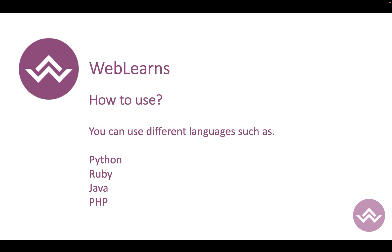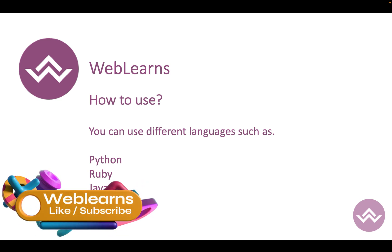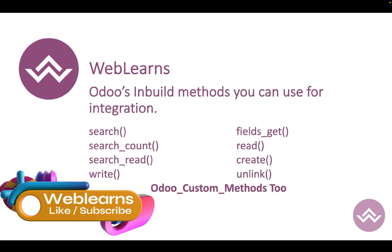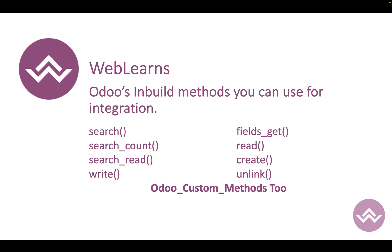If you already know about XML-RPC features, this concept will be very easy to understand. Odoo provides built-in default methods you can use to perform CRUD operations. These include: search, search_count, search_read, write, fields_get, read, create, and unlink. Odoo developers can also create custom methods, which you can access using XML-RPC as well.